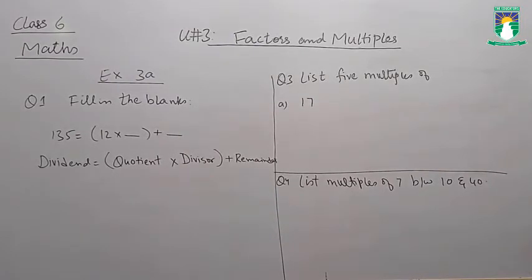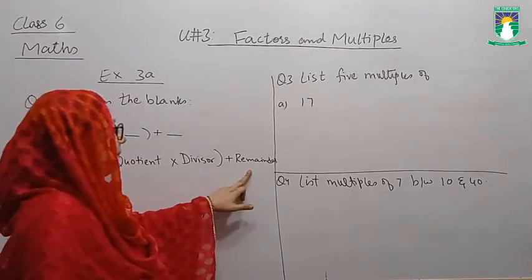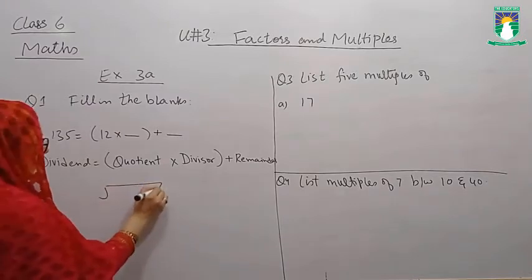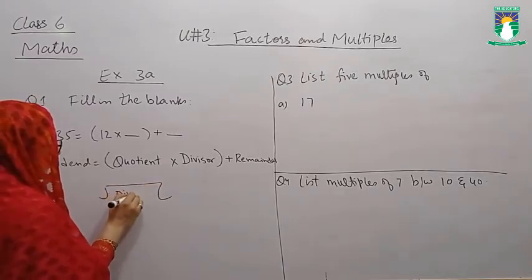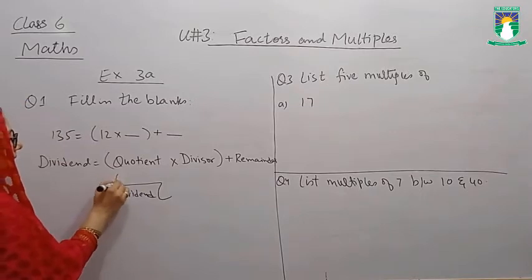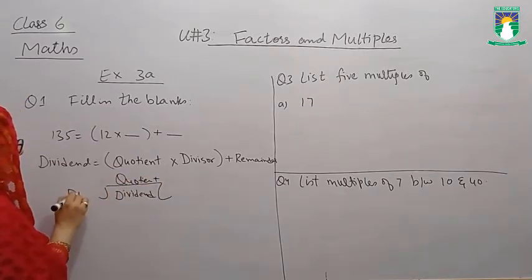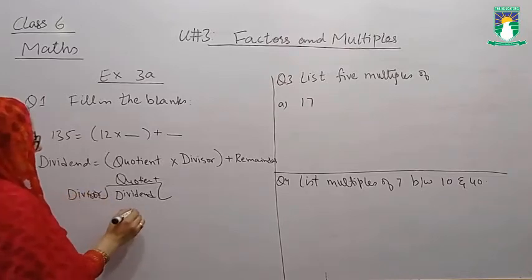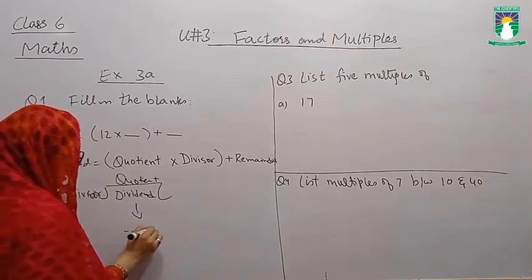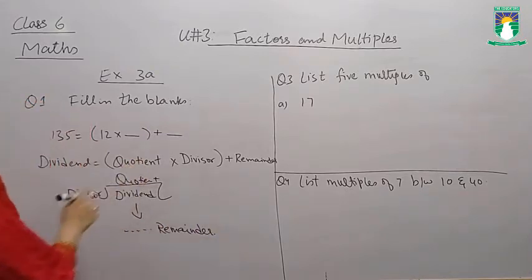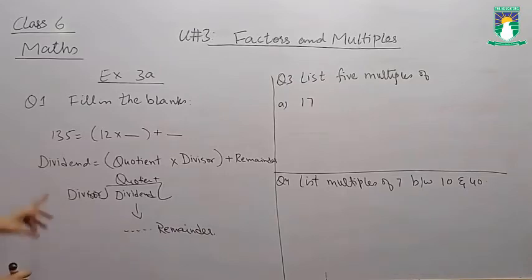Divided equals Quotient times Divisor plus Remainder. This is what we have to do, placing the correct terms in the box.